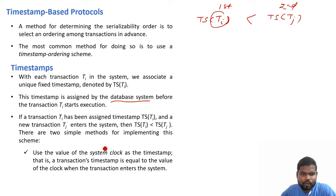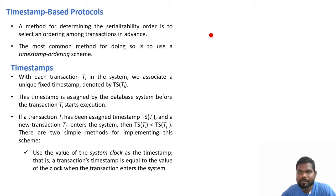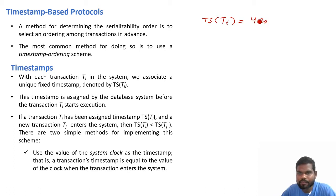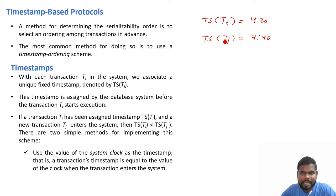There are two simple methods for implementing this scheme. The first scheme is to use the value of the system clock as the timestamp — a transaction's timestamp equals the value of the clock when the transaction enters the system. Every computer has a system clock, so whenever a transaction enters the system, the timestamp of that transaction equals the current clock value. For example, if the clock reads 4 hours 20 minutes when Ti enters, then TS(Ti) equals 4 hours 20 minutes, and if TJ enters when the clock reads 4 hours 50 minutes, then TS(TJ) equals 4 hours 50 minutes.